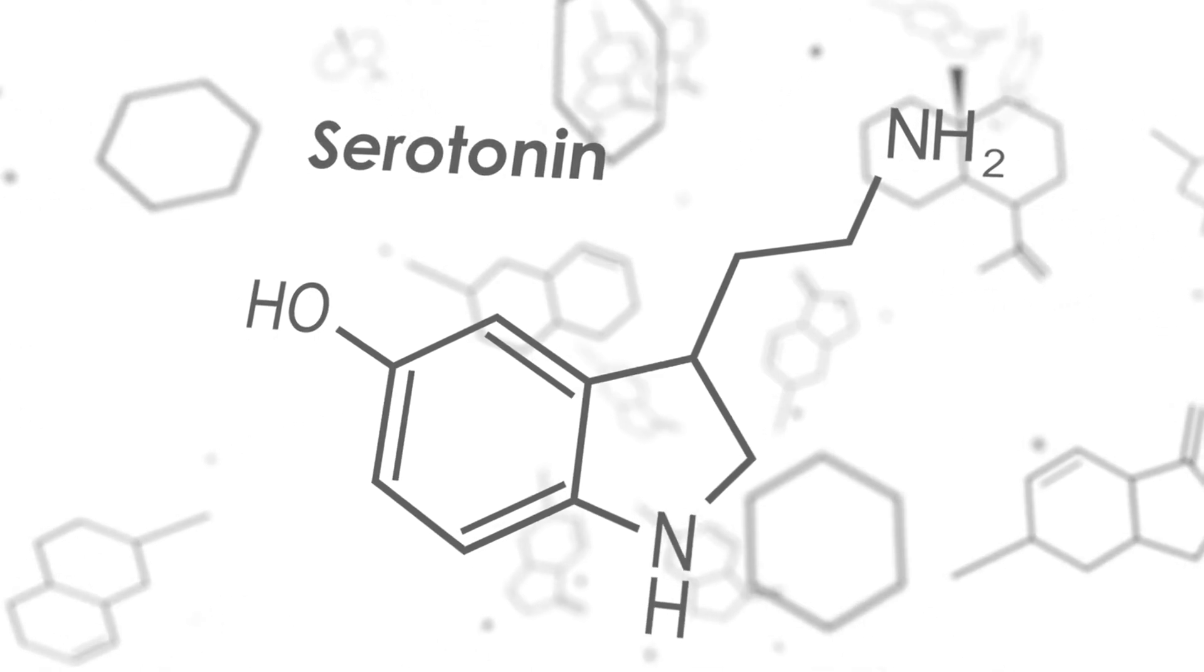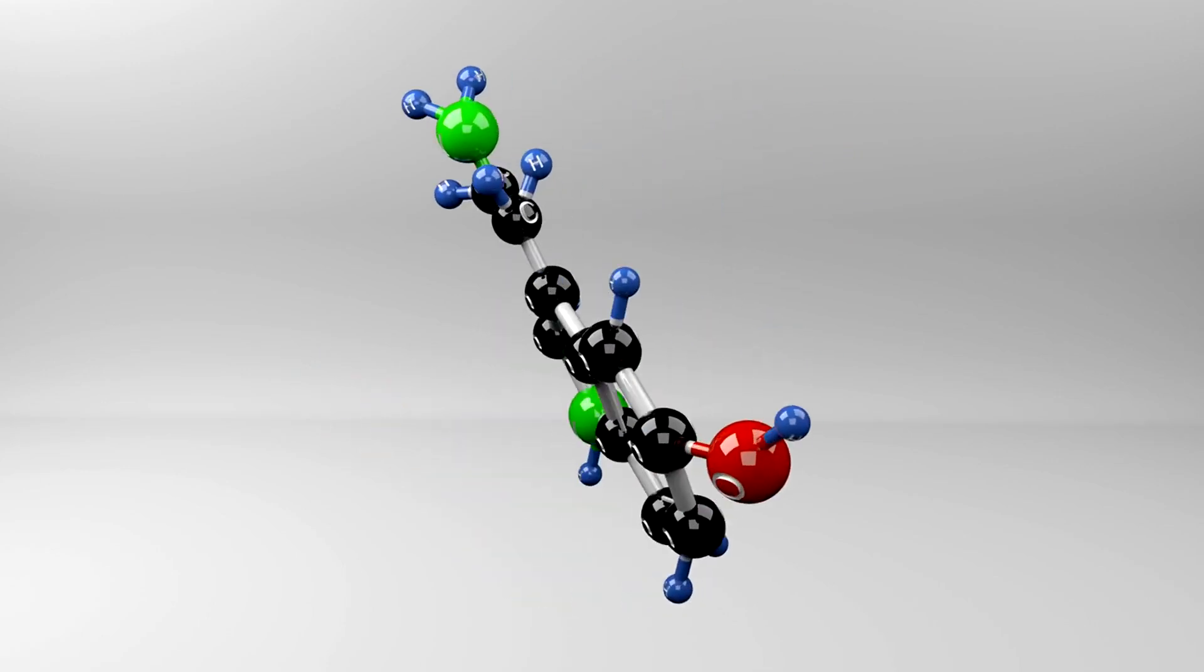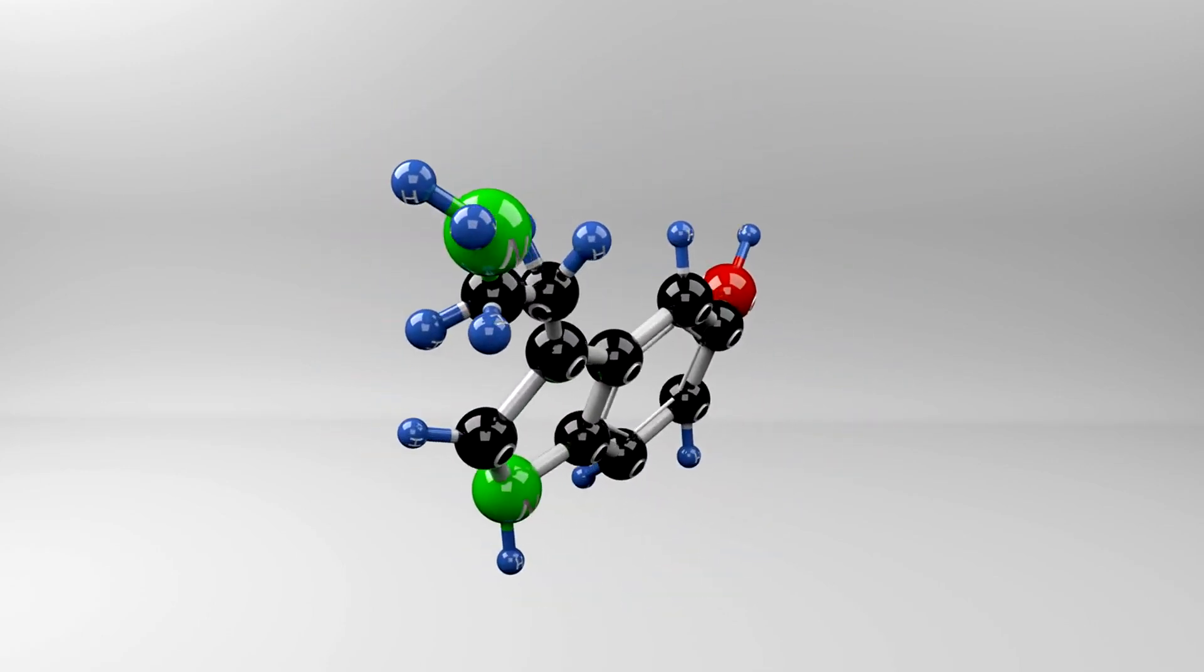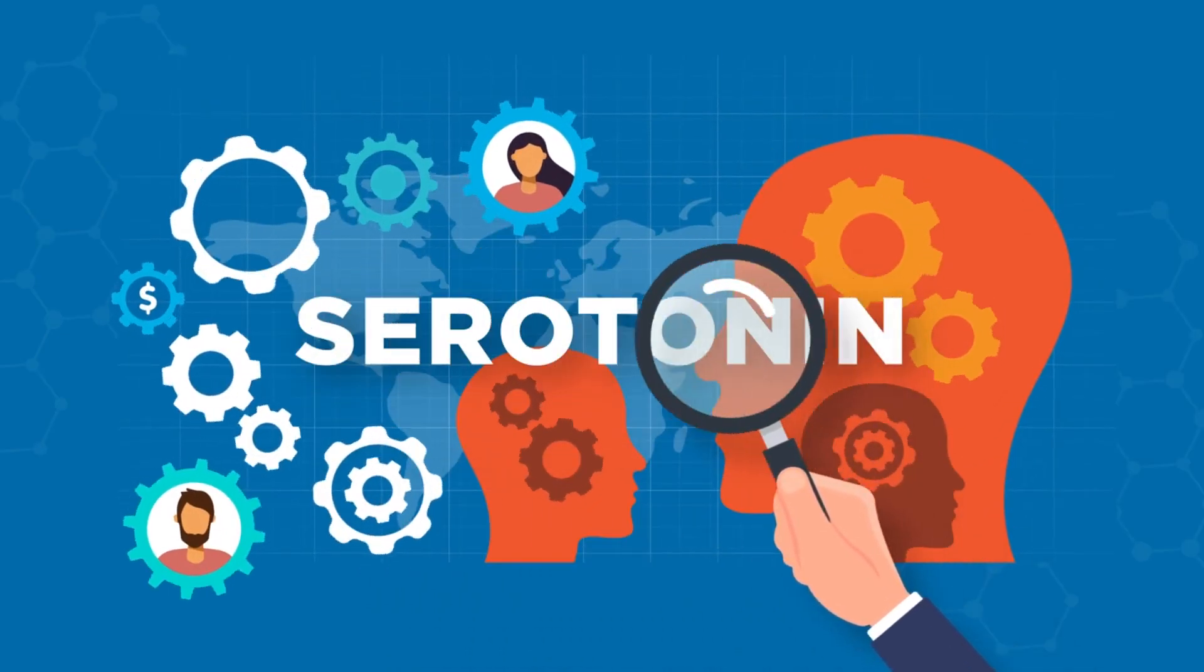Serotonin helps regulate mood, appetite, and sleep. Low levels of serotonin are associated with depression and anxiety disorders. Antidepressants like SSRIs work by increasing serotonin levels in the brain.